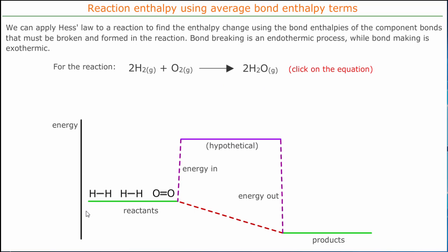Our reactants have a certain amount of energy and after the reaction they have less energy. It's an exothermic chemical reaction, so the chemical internal energy is released as heat energy. The chemical internal energy goes down and the heat energy goes up, so the system gets hotter.